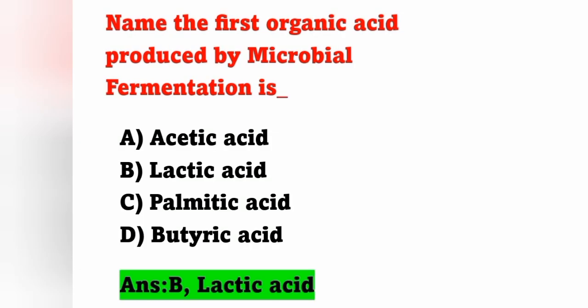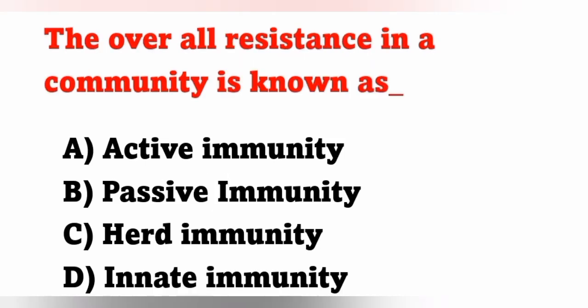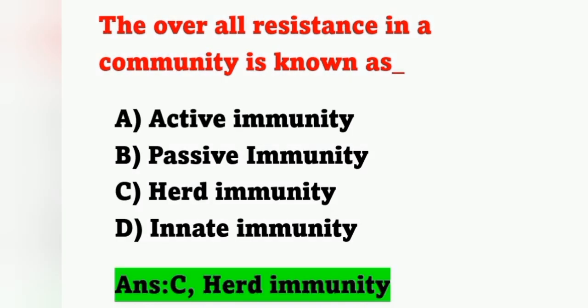Next question: the overall resistance in a community is known as — option A: active immunity, option B: passive immunity, option C: herd immunity, option D: innate immunity. The overall total resistance in a particular community is known as herd immunity. Option C is the correct answer.